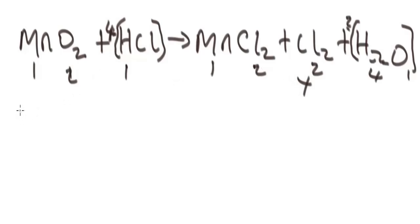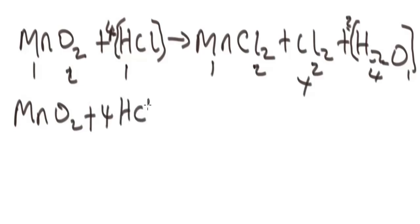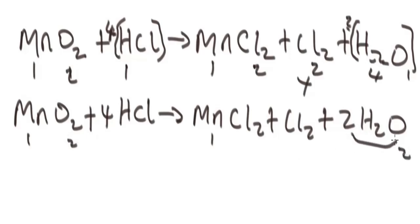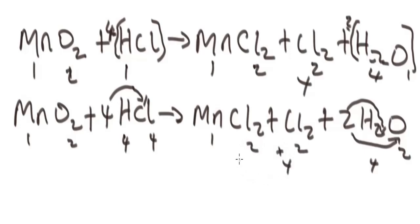Let's write it properly: MnO₂ plus 4HCl to yield MnCl₂ plus Cl₂ plus 2H₂O. Let's verify: we have 1 manganese, 1 manganese here. We have 2 oxygen here, 2 oxygen here. We have 4 hydrogen, and we also have 4 hydrogen — these 2 times 2 at the base gives 4. Chlorine here: 4 chlorine. And here we also have 4 chlorine — these 2 plus these 2 inverse gives 4. So the equation is balanced.